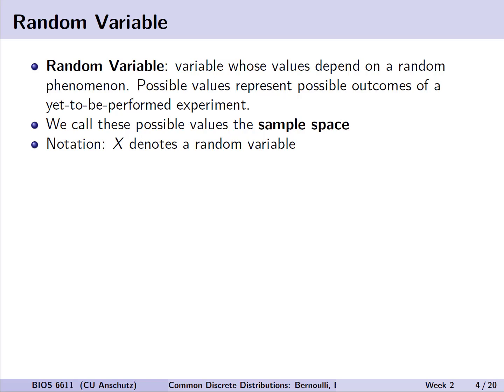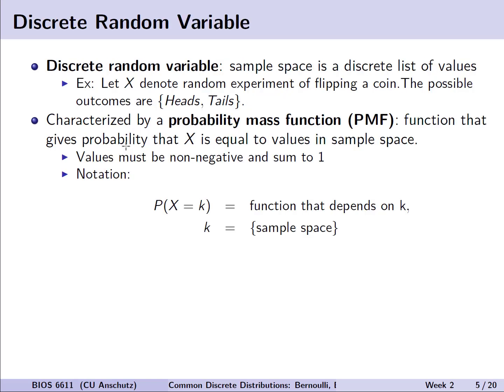In the context of our notation, we generally use capital letters with this sort of italicized font to denote a random variable like this capital X. Specifically for discrete random variables, the sample space is a discrete list of values. For example, this might be letting X denote a random experiment of flipping a coin where the possible outcomes are heads or tails.